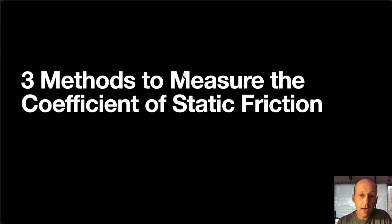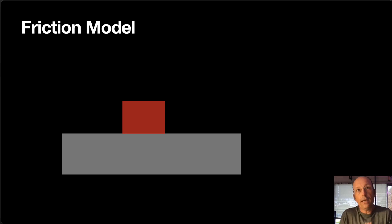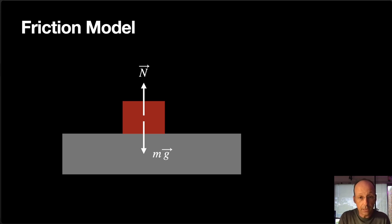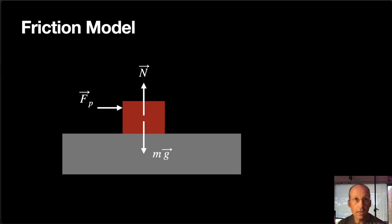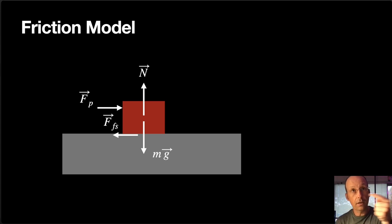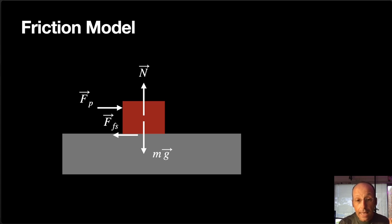If I have a block sitting on a surface, I can think about what forces would be acting on that block. The first thing is the downward gravitational force, which on the surface of the Earth equals mass times the gravitational field g. Since the block doesn't accelerate up or down, there's a normal force N pushing up. If I push it this way with some force FP, and the block doesn't move — acceleration of zero — then there has to be a backwards frictional force.